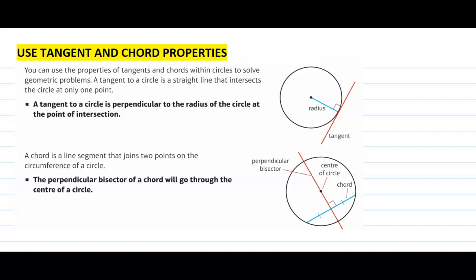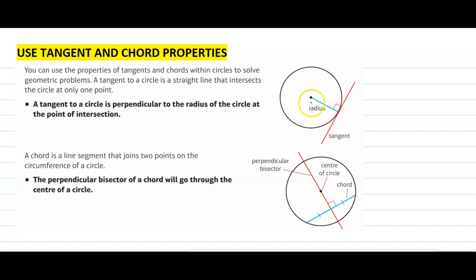Hello, A12. As we have done this, we use tangent and chord properties. In the last lesson, I am just going over what a tangent is and what a chord is. We have discussed this in the last lesson. A tangent is touching the circle at one point, and the radius always makes a 90-degree angle with the tangent.